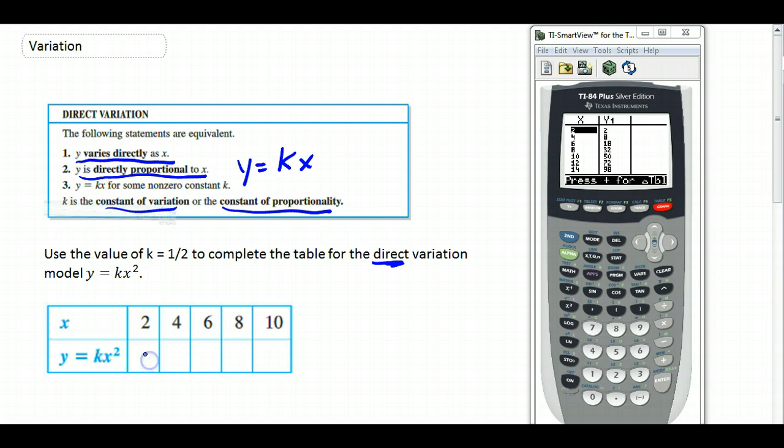And now I will go to second table, and I can just read my numbers off. So when X is 2, Y is 2. When X is 4, Y is 8. 6, 18. 8, 32. And 10, 50. So your table is a very useful feature when you're doing tables of variation.